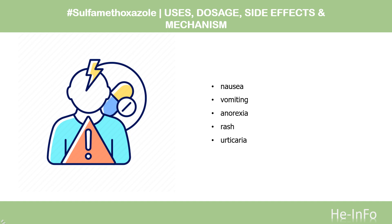Side effects: The most common side effects of Sulfamethoxazole are gastrointestinal disturbances — nausea, vomiting, anorexia — and allergic skin reactions such as rash and urticaria.